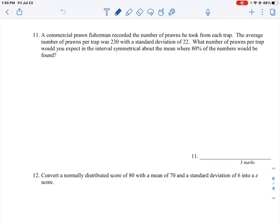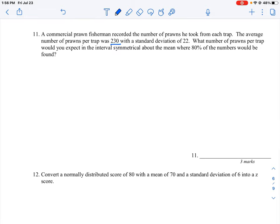Okay, so let's take a look at how to do question number 11. What we have here is a fisherman who's recording the number of prawns he's taken from a trap. The average number of prawns per trap was 230 and there's a standard deviation of 22. What number of prawns per trap would you expect in the interval symmetrical about the mean where 80% of the numbers would be found?